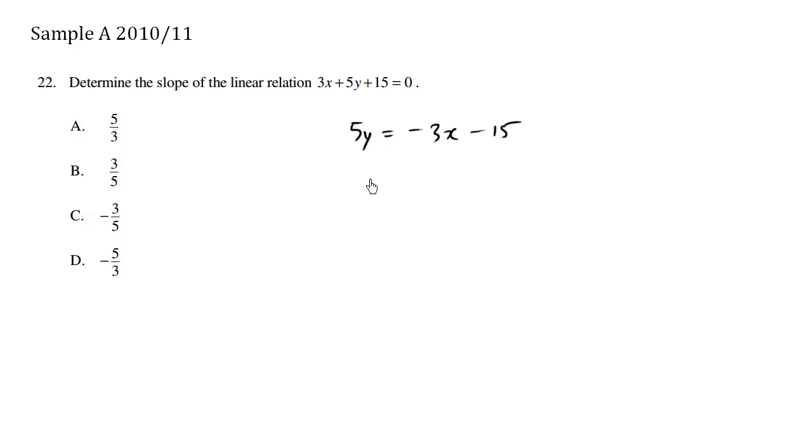We're going to divide everything by 5. We have y equals negative 3 over 5x minus 15 over 5, which is the same thing as 3.